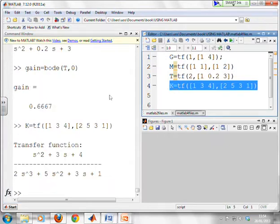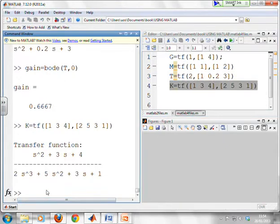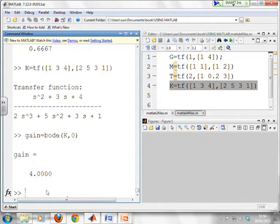And a final example. There's K. It's a bit messier. S squared plus 3S plus 4 over 2S cubed plus 5S squared plus 3S plus 1. And you can see from your understanding of steady state gain that the answer would be 4 for the steady state gain. But we'll just demonstrate that bode will do this for you.